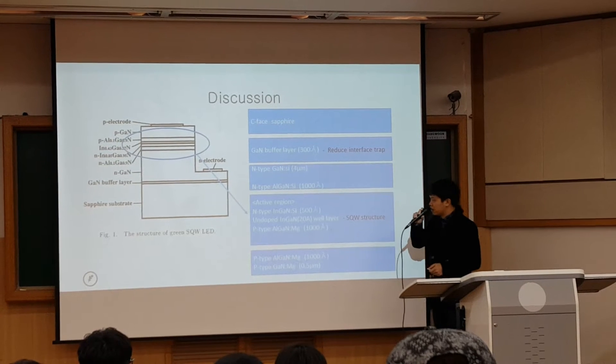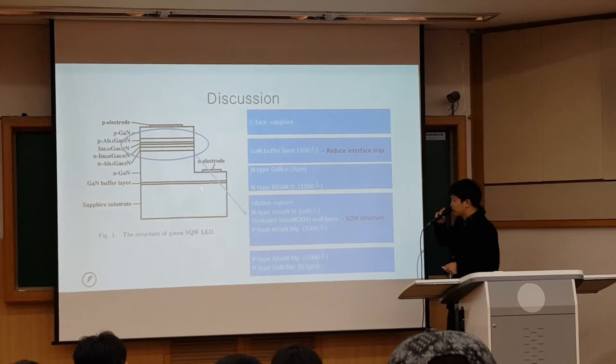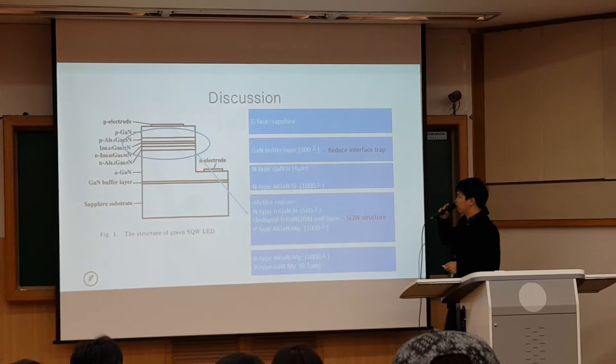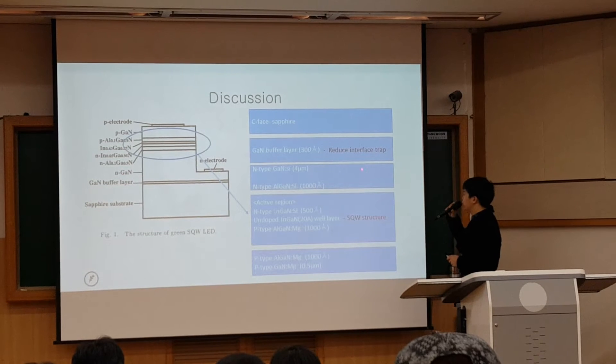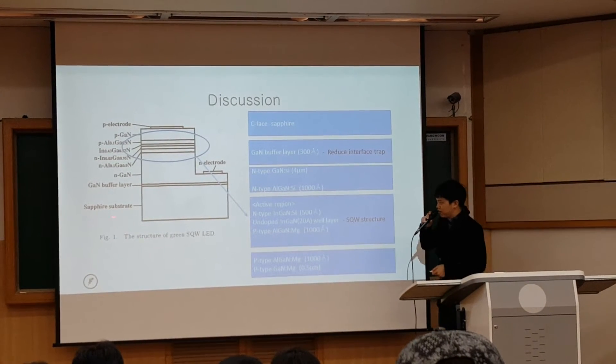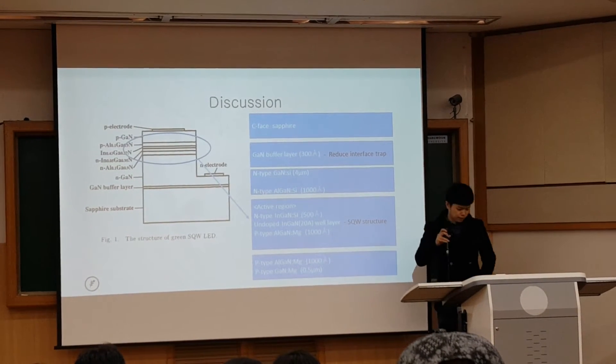Another thing about the gallium nitride buffer layer: it has the function of reducing interface traps between the gallium nitride and the sapphire substrate.